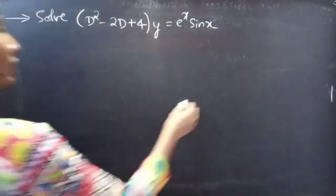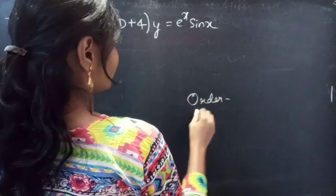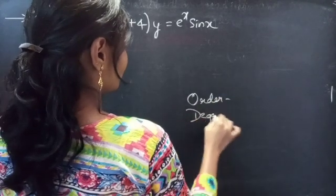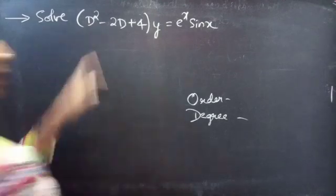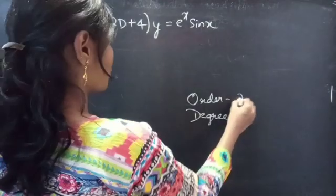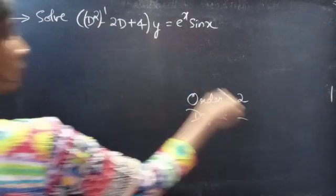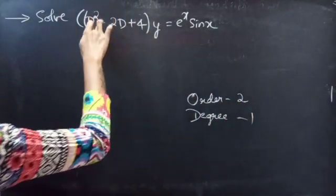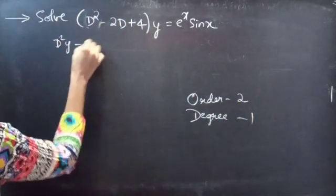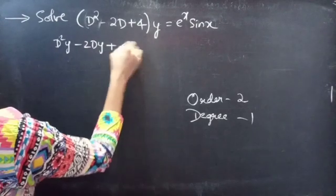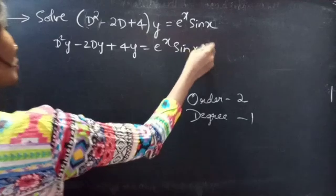So let's find order and degree. Identify the highest derivative. Here, D squared is the highest derivative, so order will be 2. And the highest power of the highest derivative is the degree. Degree is 1. Or just write the given differential equation as d²y minus 2dy plus 4y equals e to the power x sine x.